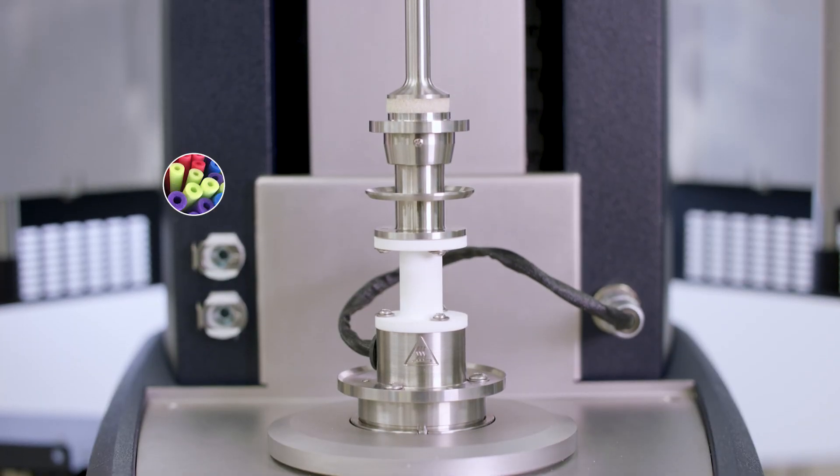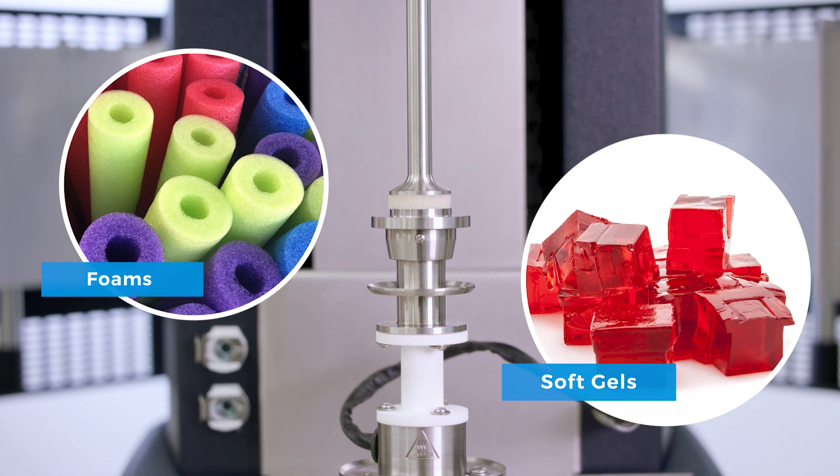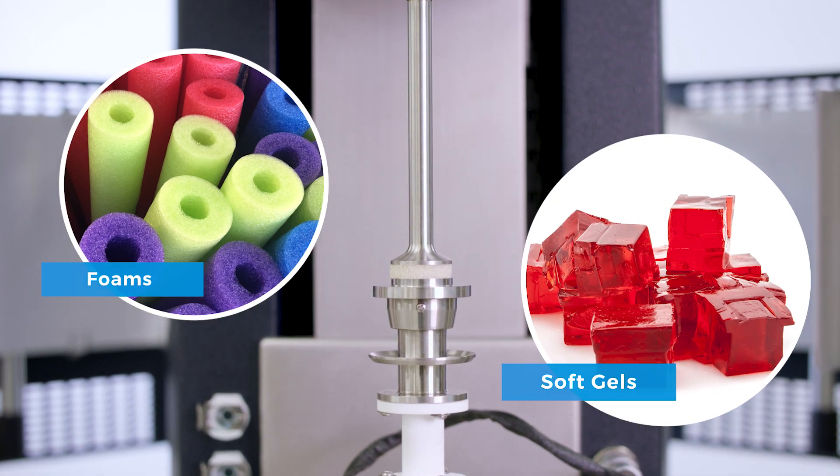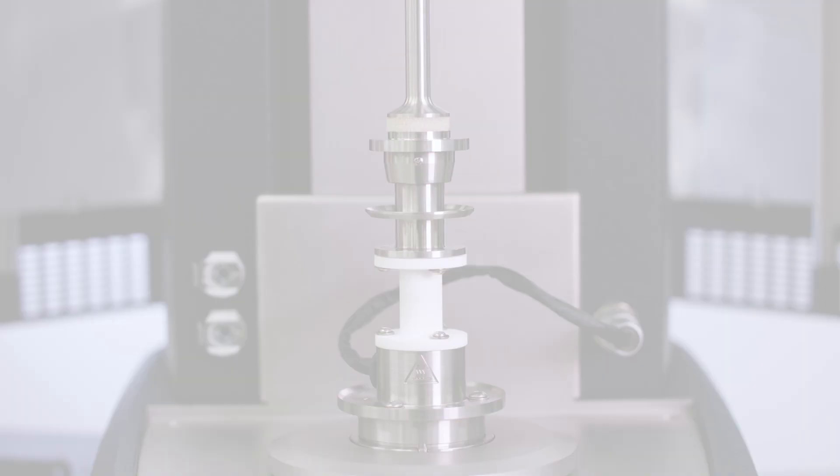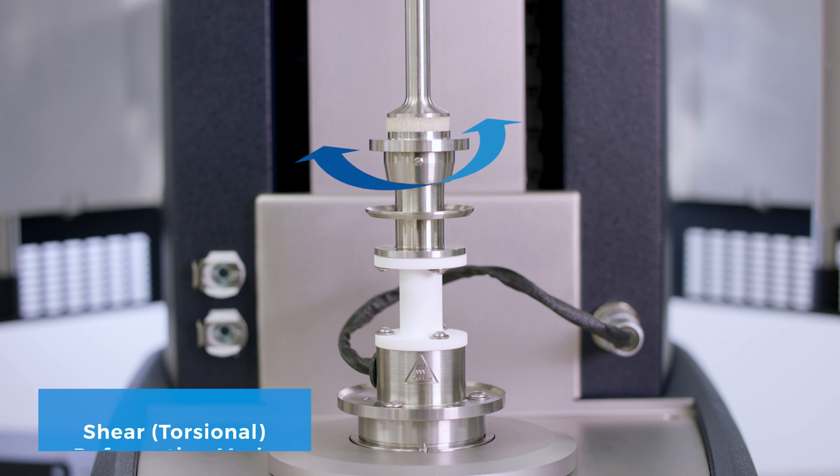Finally, materials like foams or soft gels can be tested using the parallel plate geometry. With the parallel plate geometry, sample can be tested under the regular shear deformation mode. Using the Discovery Hybrid Rheometer equipped with the axial DMA capabilities, the same parallel plate geometry can also be used to test soft samples under compressive deformation as well.